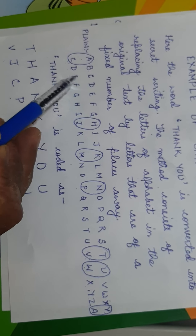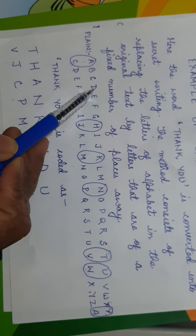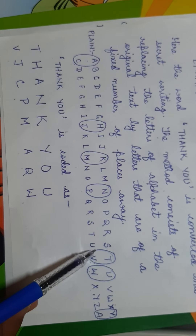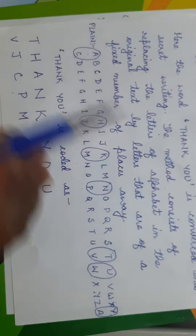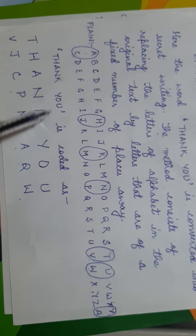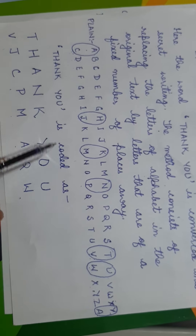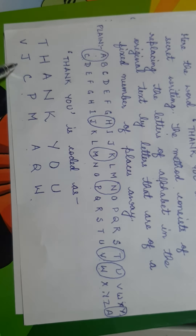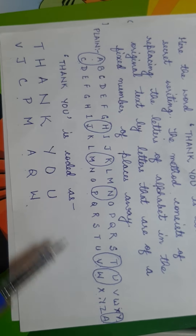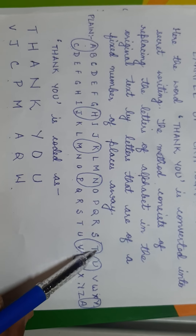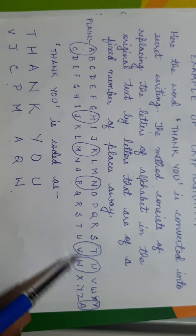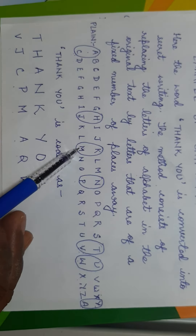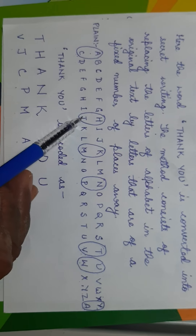First we write alphabets from A to Z. Here A is replaced by C, B is replaced by D, C is replaced by E, and D is replaced by F, and so on. Using this pattern of key, the word 'thank you' is coded as VJCPMAQW.